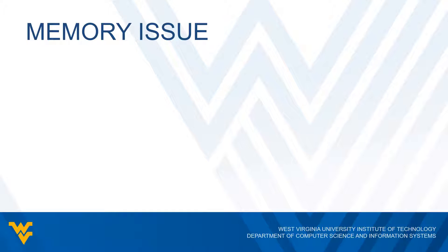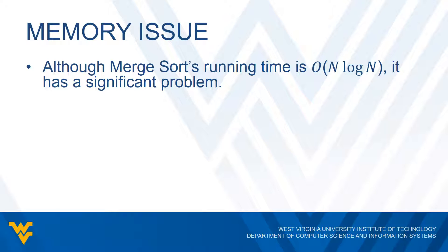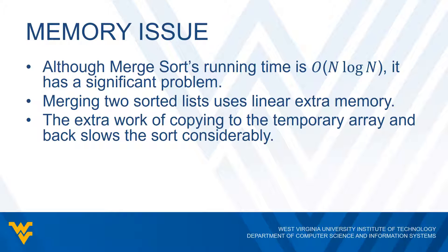So we've established that the merge sort algorithm takes O(N log N) time, which is great. But there is a significant problem with the algorithm. We're merging two sorted lists and storing the result into a third array, and that merging uses extra memory — specifically, linear extra memory. That means there's extra work copying stuff into the array and then copying it back, which does slow down the algorithm.